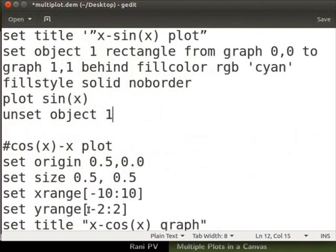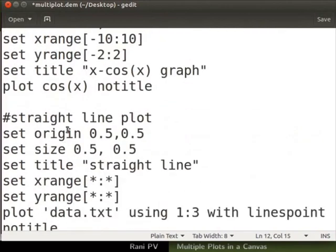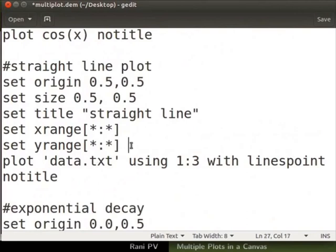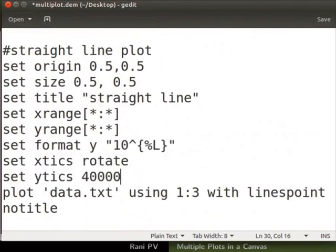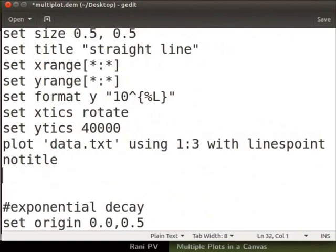For the straight line plot, add modifications on axis formats. The y-axis numbers are large so I will change the notation. I will also rotate the x-axis ticks in the plot. I will also specify the y-ticks spacing. We will unset the y-axis format after the plot command is executed.